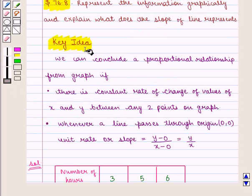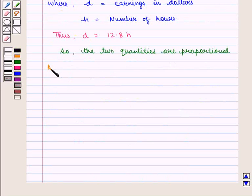As we move on the key idea that we can conclude a proportional relationship from graph if there is constant rate of change of values of X and Y between any two points on graph. Also, we know that it is a linear relationship. So, the graph will be a straight line passing through the origin that is 0,0.